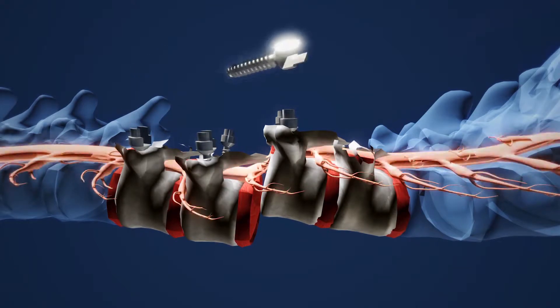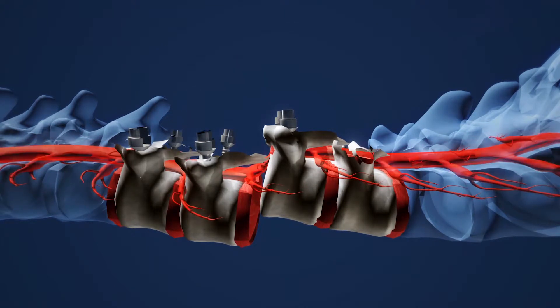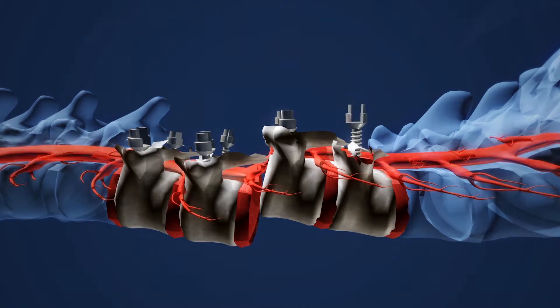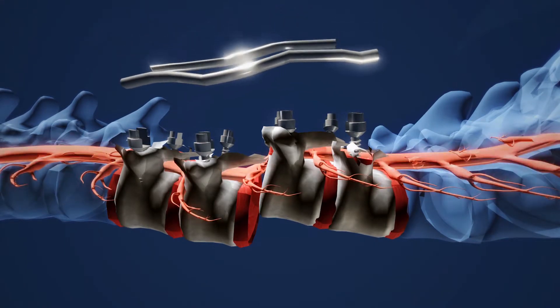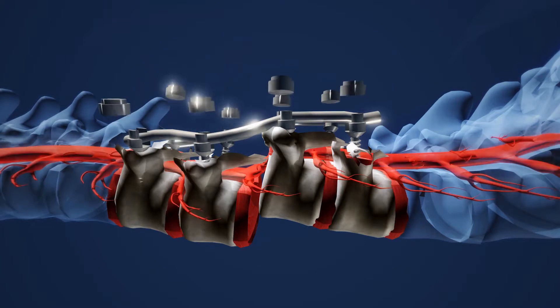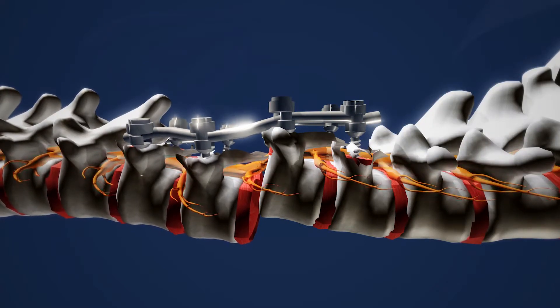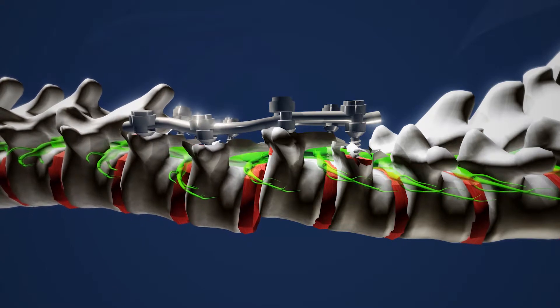So we put screws into the bone and then we can pull and lever arm off of those screws and that's what we do here. We use rods and we have to realign the entire spinal column to hold him up so he can walk again but also to relieve the stretch in the spinal cord.